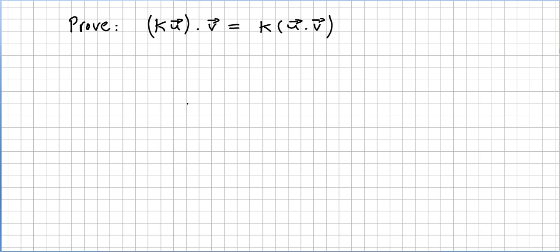Now we are asked to prove that k scalar times u times v equals k, and we can associate the vectors u and v. The proof is really easy.